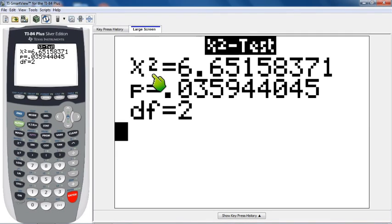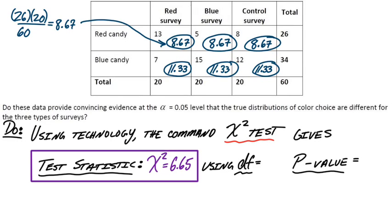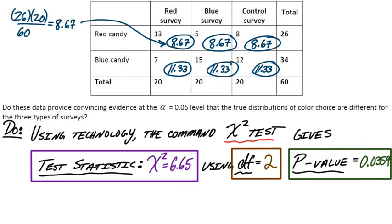Chi-square, the test statistic, 6.65. The p-value, 0.0359. And degrees of freedom, 2. So we've got our test statistic. Chi-square is 6.65, which uses 2 degrees of freedom. And our p-value is 0.0359. So all three of those things, that'll get us full credits for the do step.